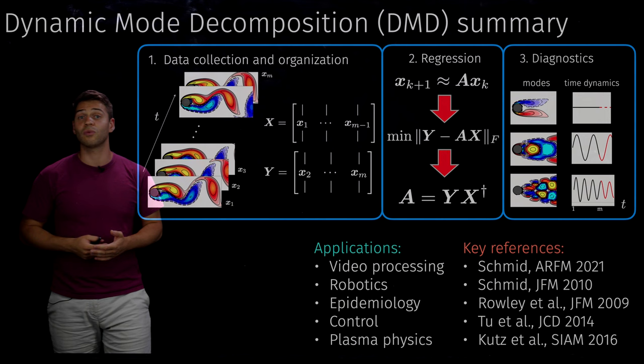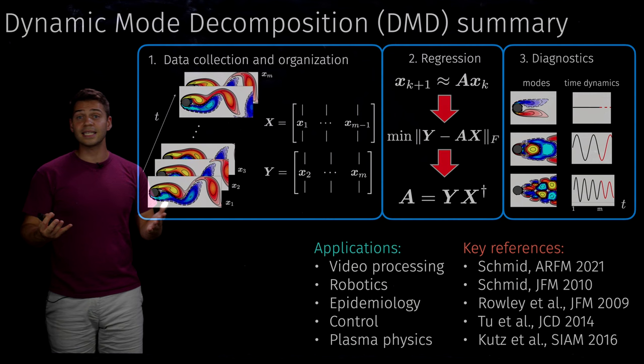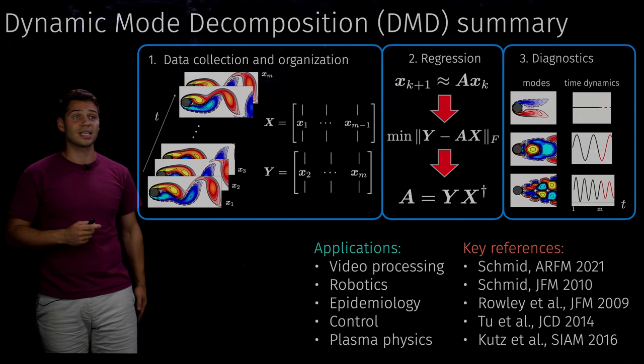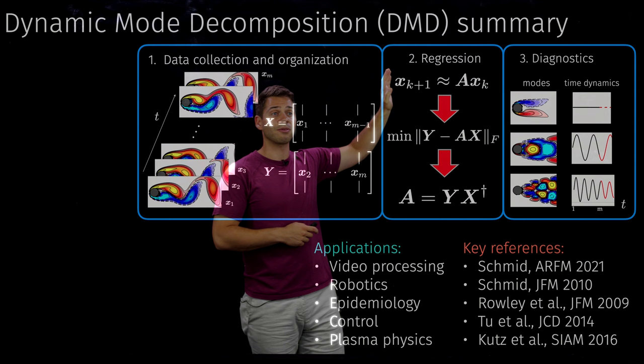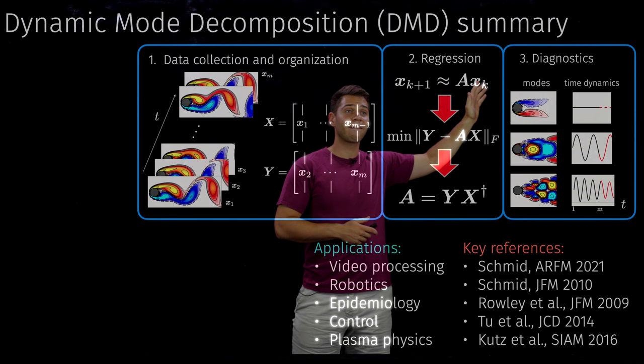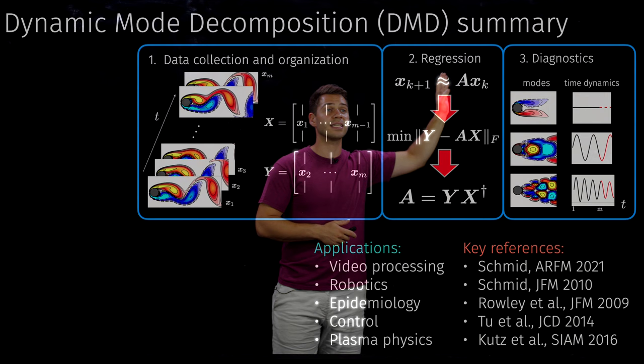DMD seeks to model the collected data as if it were generated by a linear dynamical system. Mathematically, we assume there is a matrix A such that for each X_k, we can represent the state advanced forward one time step as A times X_k. We don't know A — we want to find it as part of the problem.